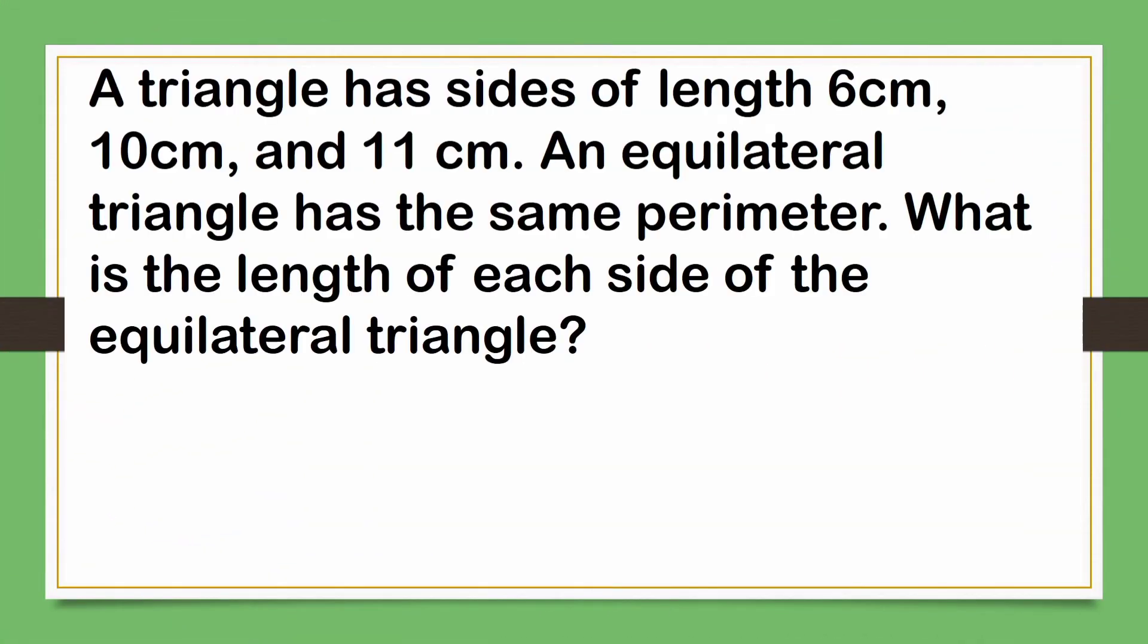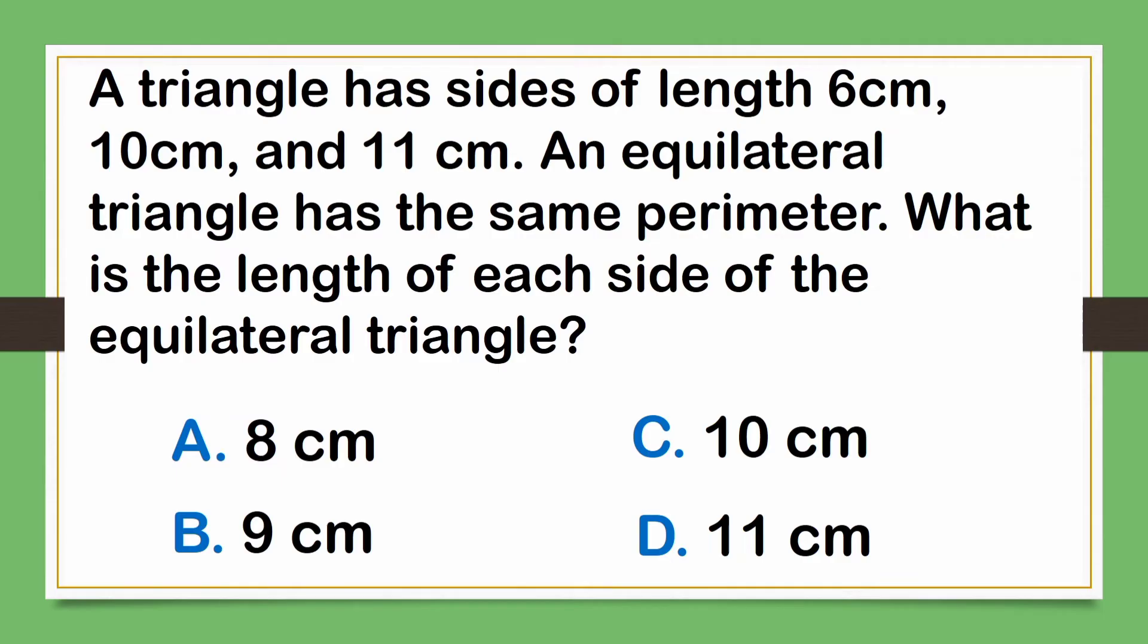Next question. A triangle has sides of length six centimeters, ten centimeters, and eleven centimeters. An equilateral triangle has the same perimeter. What is the length of each side of the equilateral triangle? Letter A, eight centimeters. B, nine centimeters. C, ten centimeters. Or Letter D, eleven centimeters. The answer is Letter B, nine centimeters.